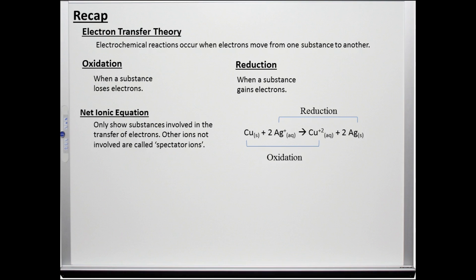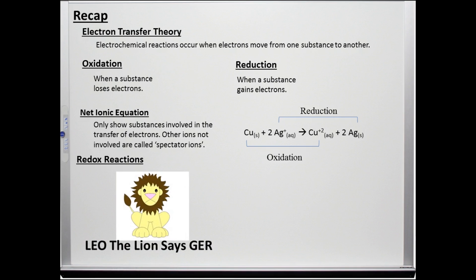Electrochemical reactions are also known as redox reactions because substances are being reduced while others are oxidized. We can remember the definition of oxidation and reduction using a simple memory aid. Leo the lion says GER. A loss of electrons means the substance is oxidized while a gain of electrons means the substance is reduced.